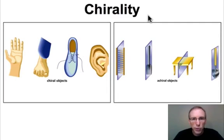When several tetrahedral centers are connected together, as is typical in organic molecules, complex shapes can arise. Because of this, we're interested in being able to characterize the geometric properties of complex shape. Chirality is one such geometric property that we're interested in.